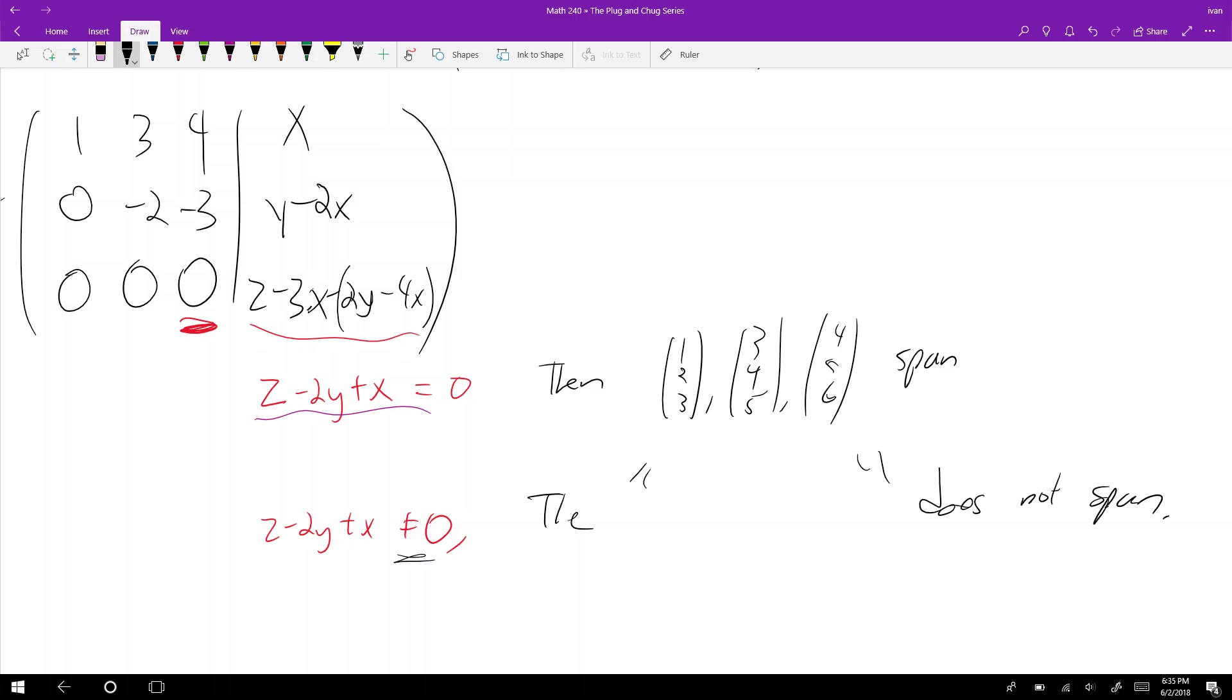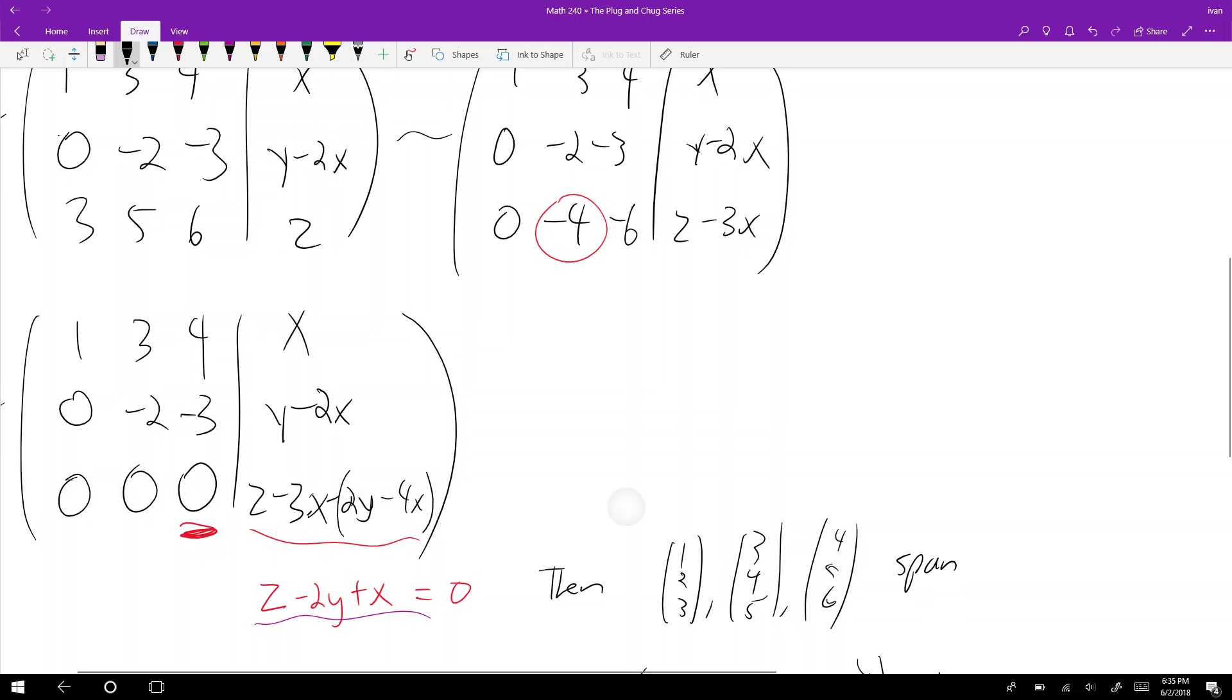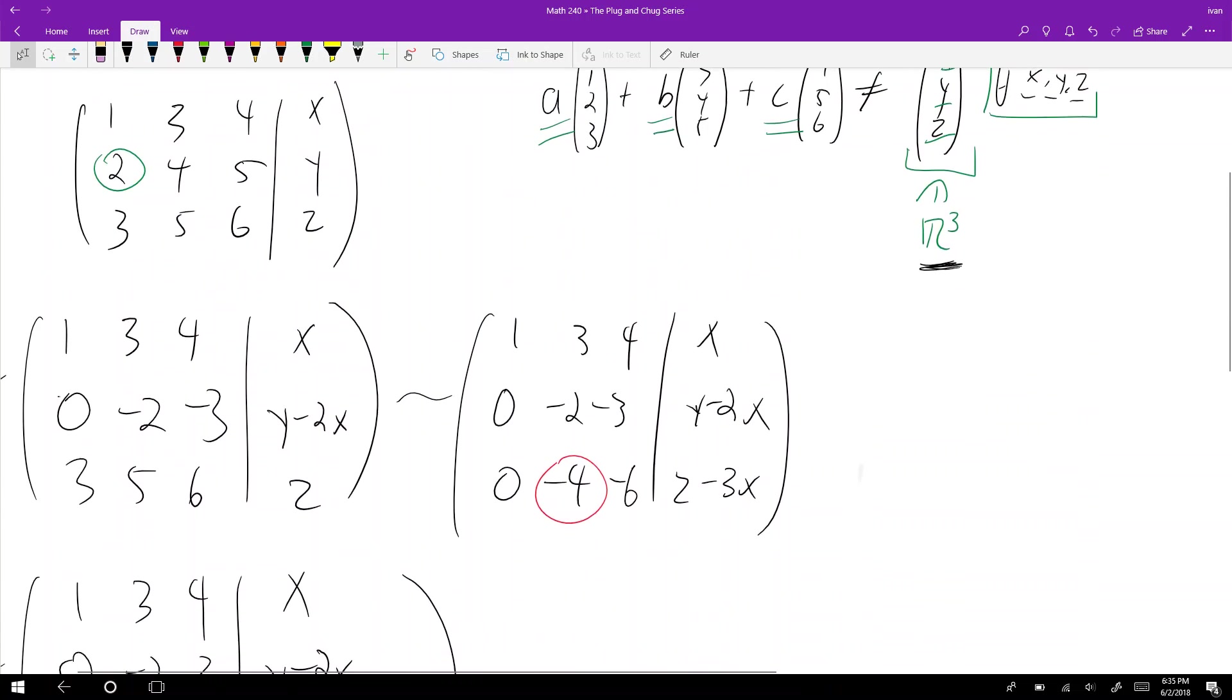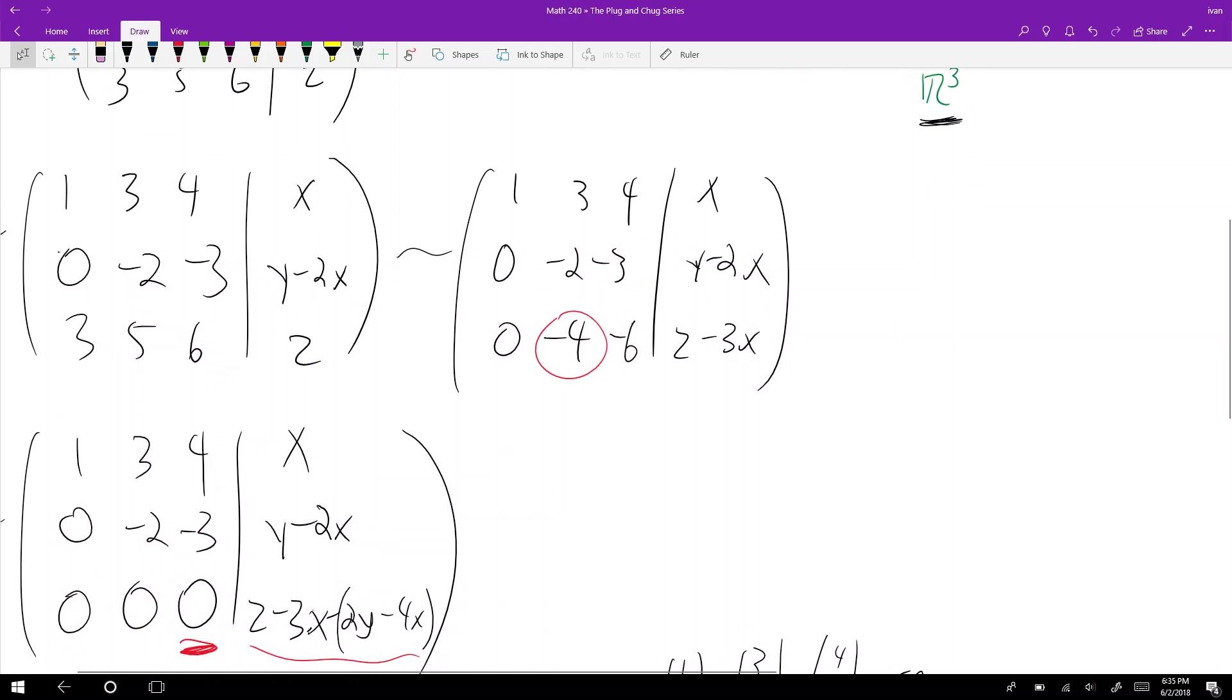Therefore it can't span all of R3, but it does span the subspace. I can verify that this plane is a subspace. The set of vectors spans a subspace but not all of R3. That's how you do it - you put it into a matrix and row reduce.